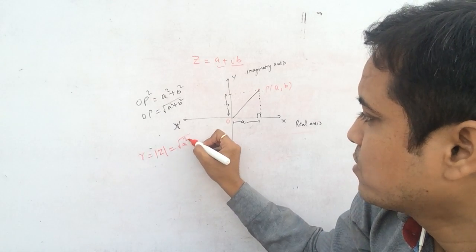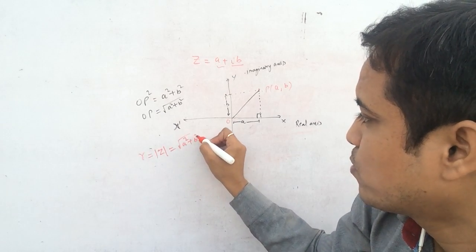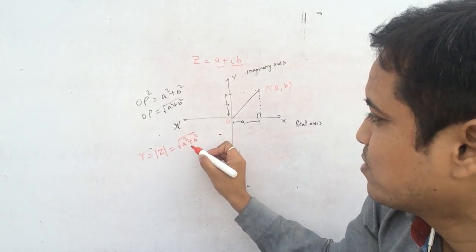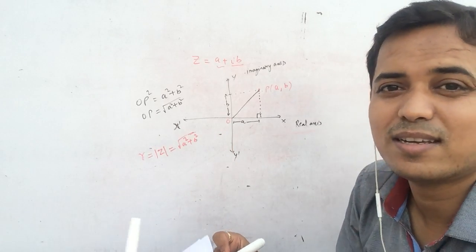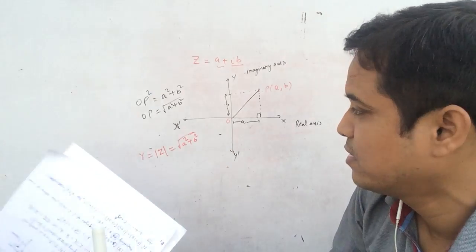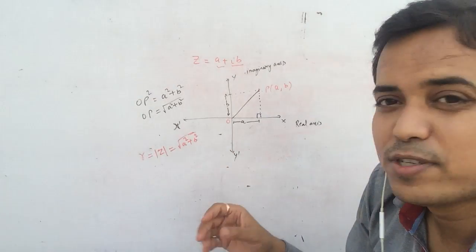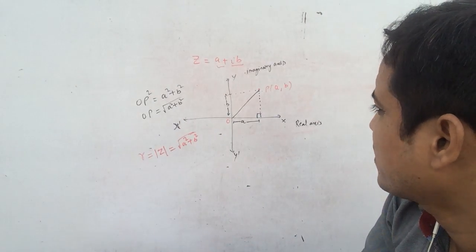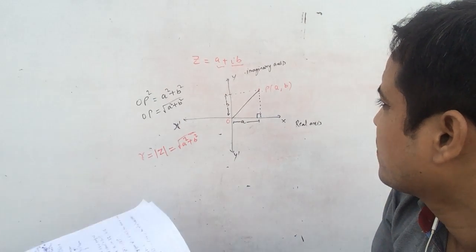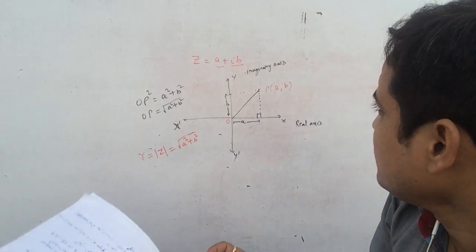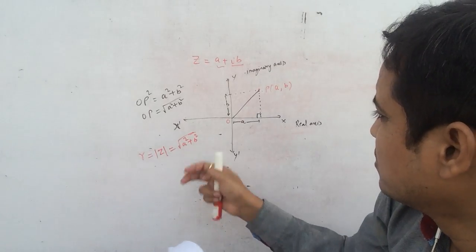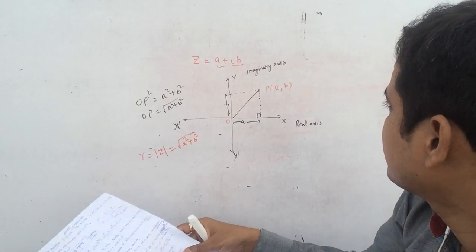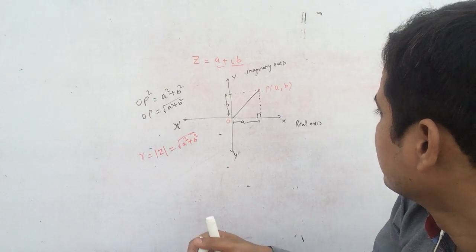OP is called R, or the modulus of Z. A² + B² — where A is the real part of the complex number and B is the imaginary part, or the coefficient of the imaginary part.